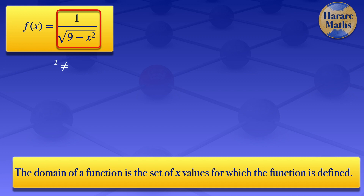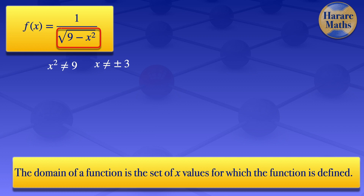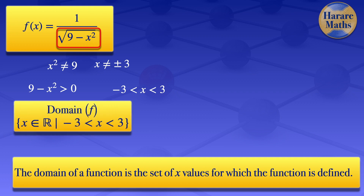The denominator is not equal to 0 if x² is not equal to 9, which gives us x is not equal to plus or minus 3. But in addition, we are having the square root there, and we are looking at a real valued function. For a real valued function, what is under the square root sign must be greater than 0. So we need 9 - x² > 0, and solving for x, we get x is greater than minus 3 but less than 3. So the domain of that given function is the set where x is a real number such that x is greater than minus 3 but less than 3.